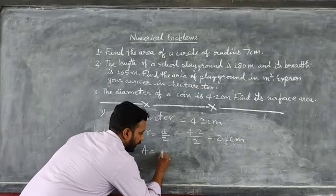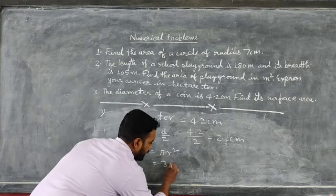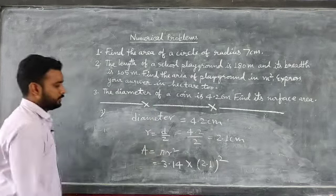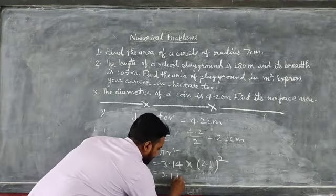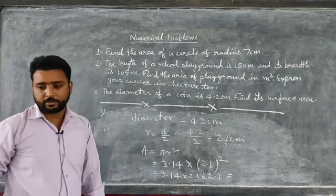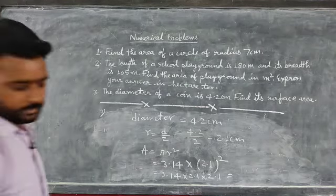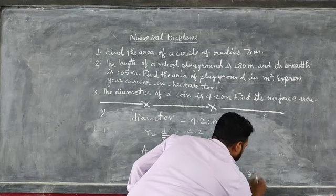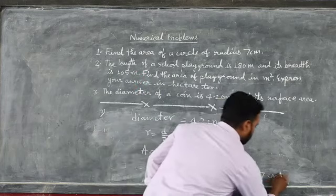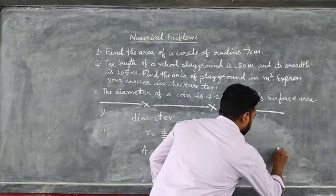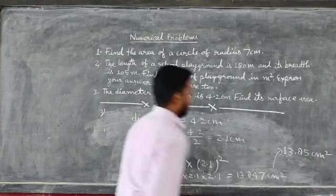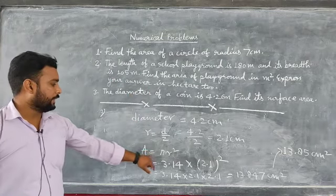Area equals π r square. Put the value of π as 3.14 and r as 2.1. So we have 3.14 into 2.1 into 2.1, which gives approximately 13.85 square centimeters. This is the area of the given circle.